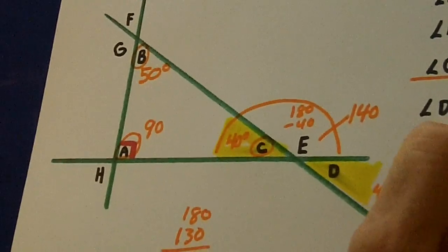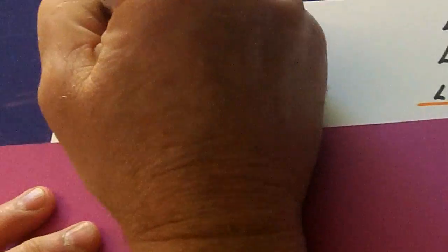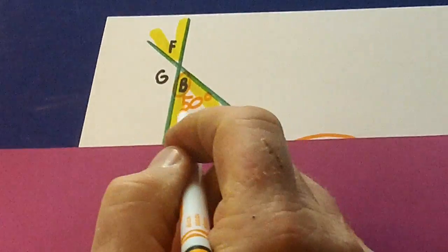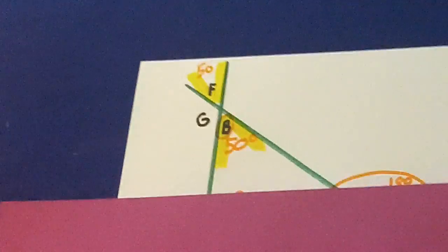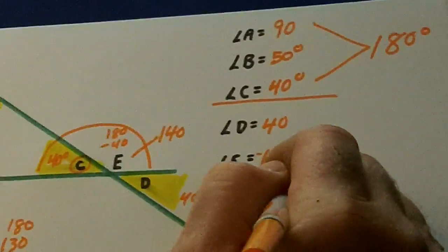Same thing up here. Vertical angles. B is 50, F is 50.